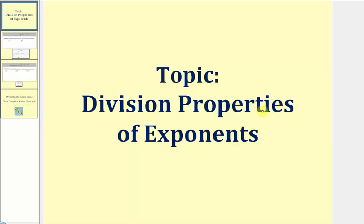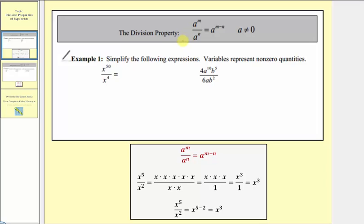Welcome to a lesson on the division properties of exponents. Our first division property is: a raised to the power of m divided by a raised to the power of n is equal to a raised to the power of m minus n. This tells us that if we're dividing and the bases are the same, we subtract the exponents.